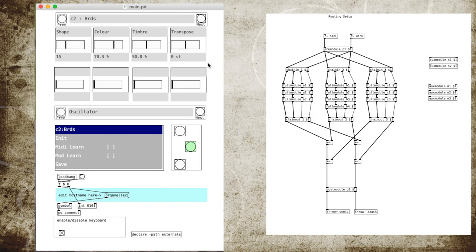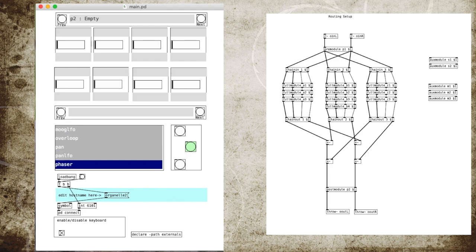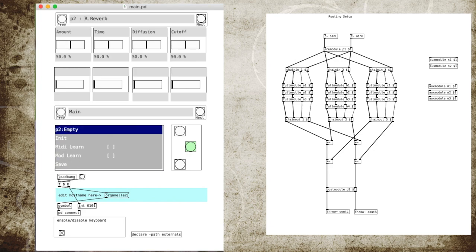We could add reverb to all of this. Coming to the post-processing slots — P2 — we go up into FX and choose a reverb. Let's go for a nice big reverb... probably a bit overkill. I don't like that one — too much. Let's go for another one, a bit more sane. It's not helped by the fact that my notes were fairly random.